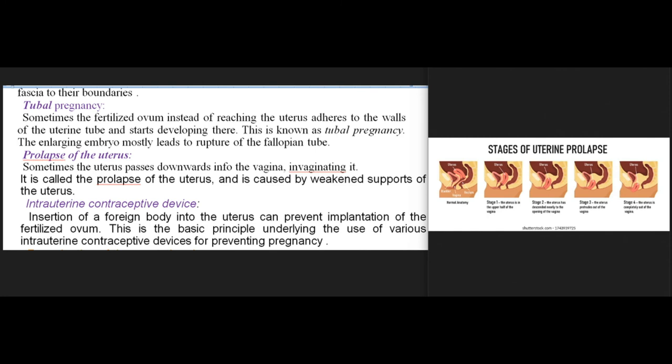Tubal pregnancy: the fertilized ovum, instead of reaching the uterus, adheres to the walls of the uterine tube and starts developing there; the enlarging embryo mostly leads to rupture of the fallopian tube. Prolapse of the uterus: sometimes the uterus passes downwards into the vagina, invaginating it; this is called prolapse of the uterus and is caused by weakened supports of the uterus.